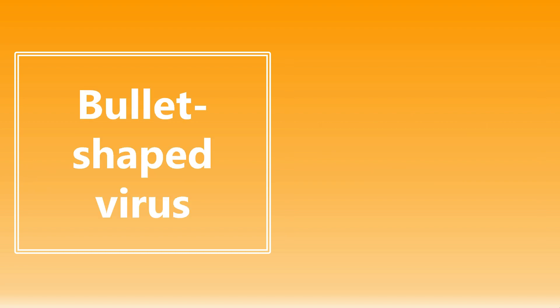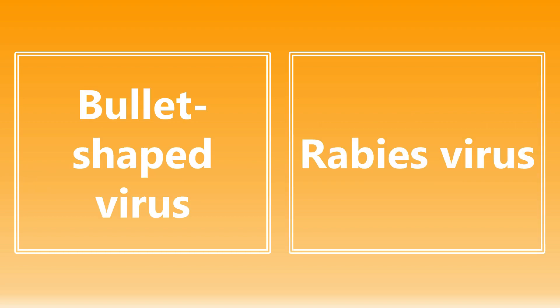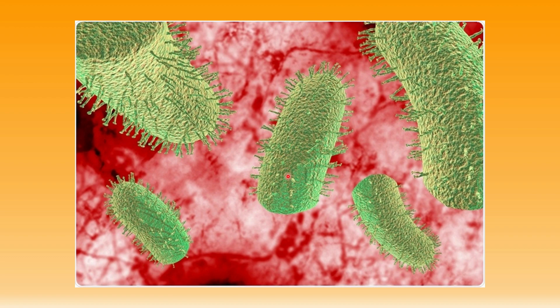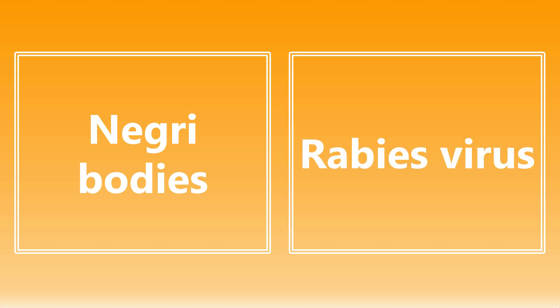Another shape association: a bullet-shaped virus. This is going to be the rabies virus. Here's a picture — especially the one in the middle — it kind of looks like a bullet shape, and that's the rabies virus they are trying to get at. In addition to that, if they mention Negri bodies, this is also a reference to rabies virus. Remember, these Negri bodies are cytoplasmic inclusions that can be found in neurons or in Purkinje cells of the hippocampus.